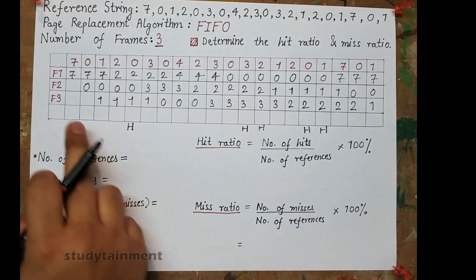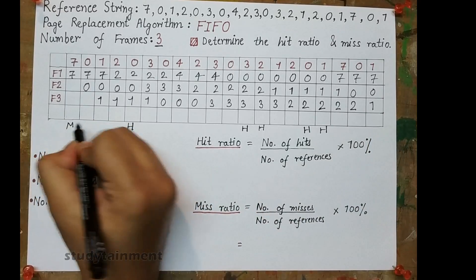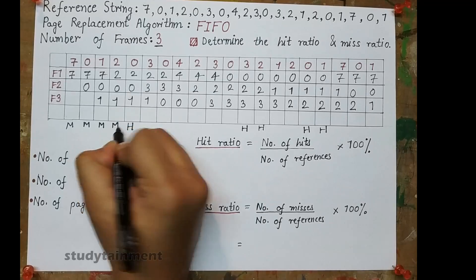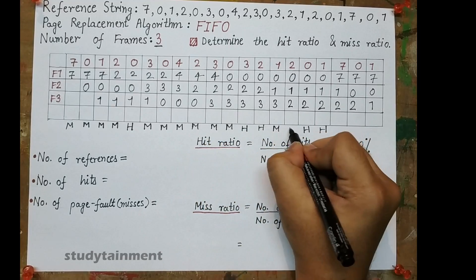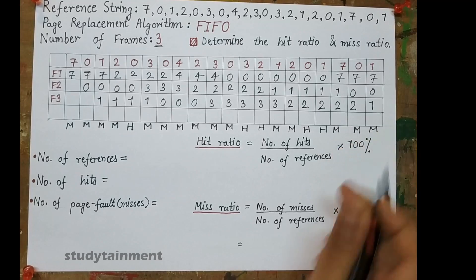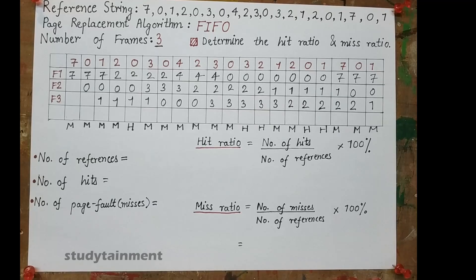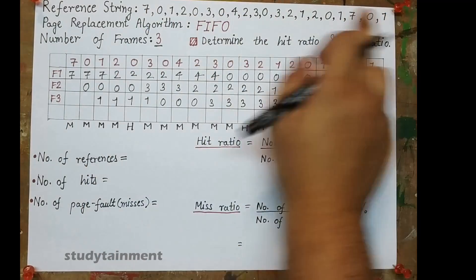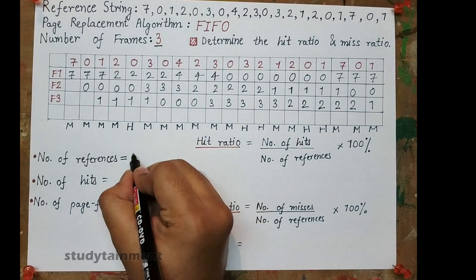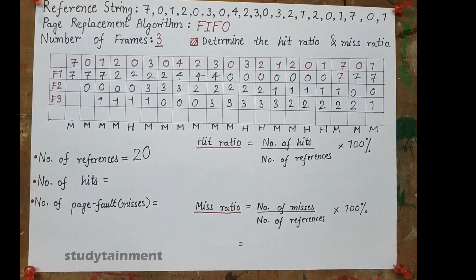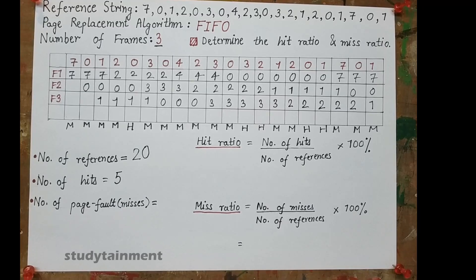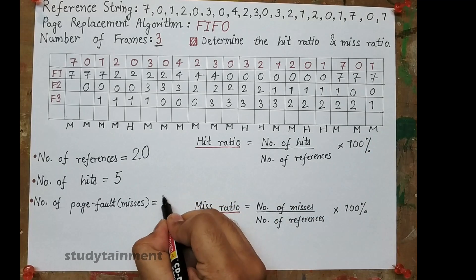We have completed the main part. Counting the hits: 1, 2, 3, 4, and 5 — and the rest are misses. We wrote hits first because they are fewer in number. The number of references is the total length of the entire stream, which is 20. The number of hits is 5, and the number of page faults is 20 minus 5, which equals 15.